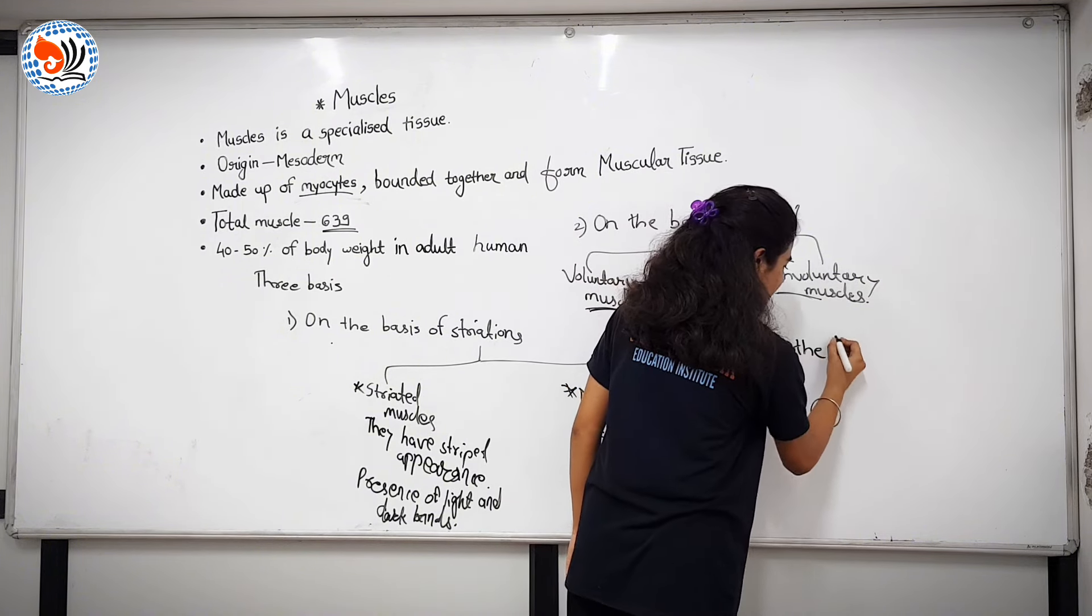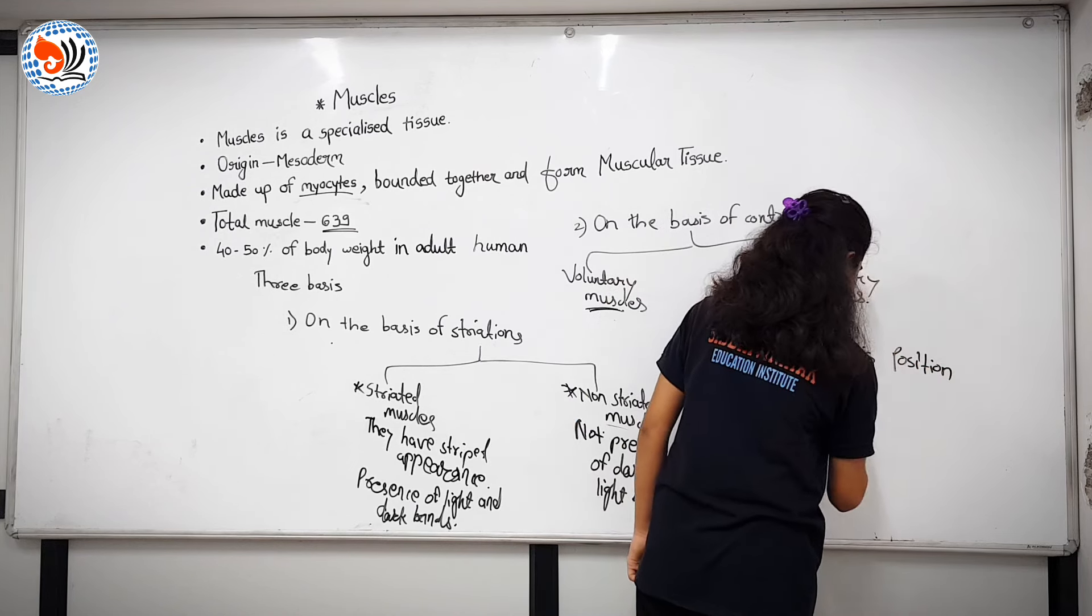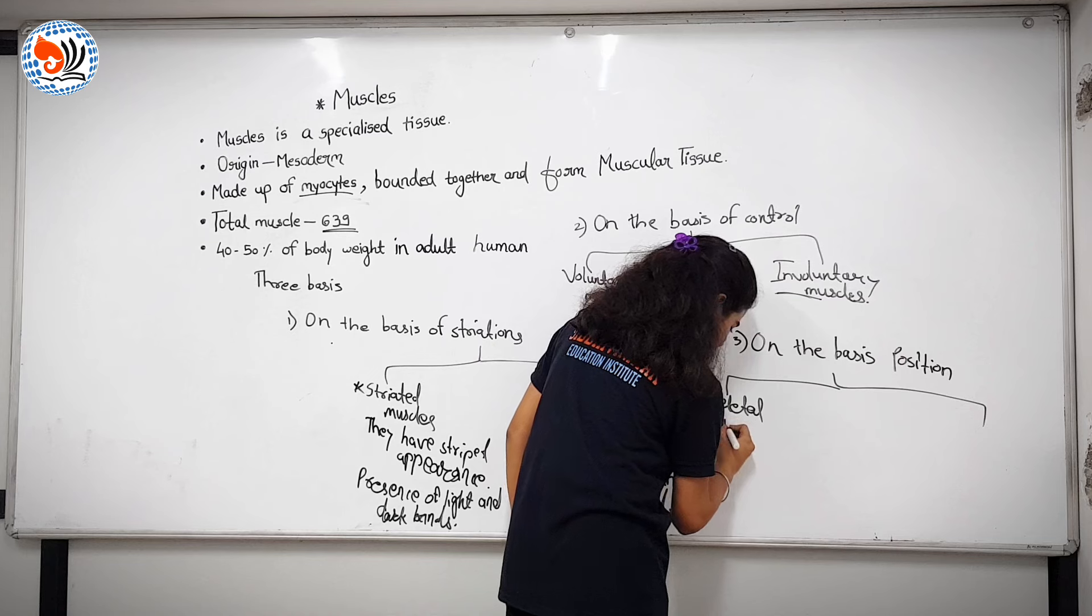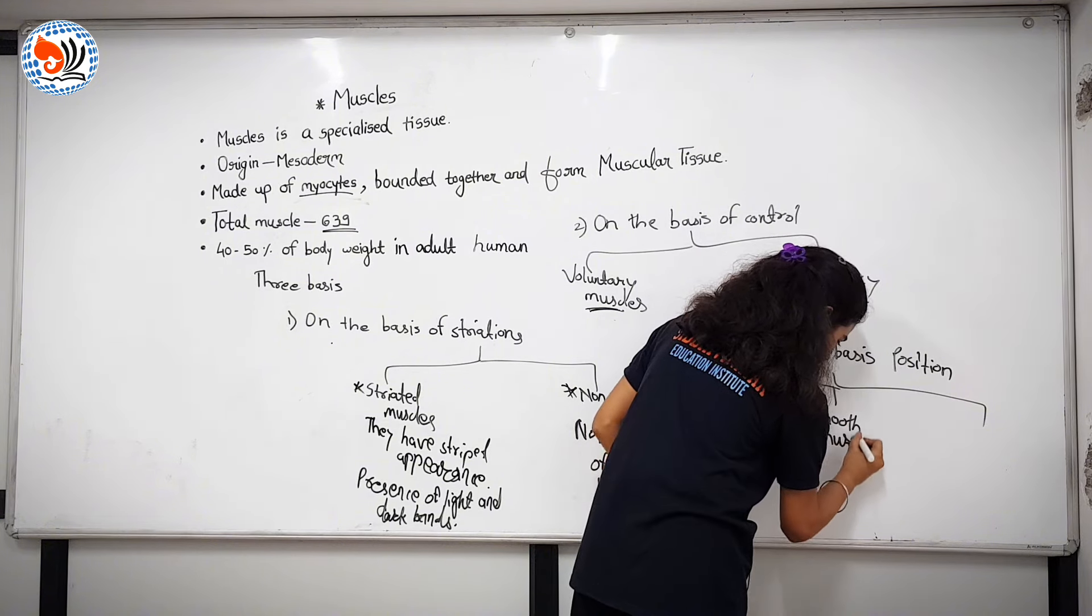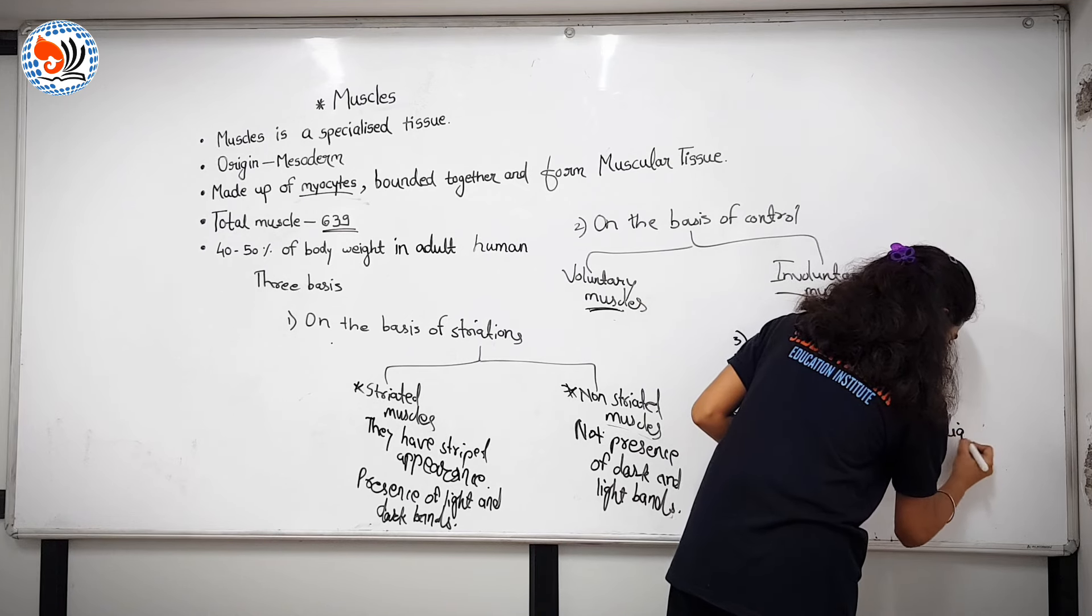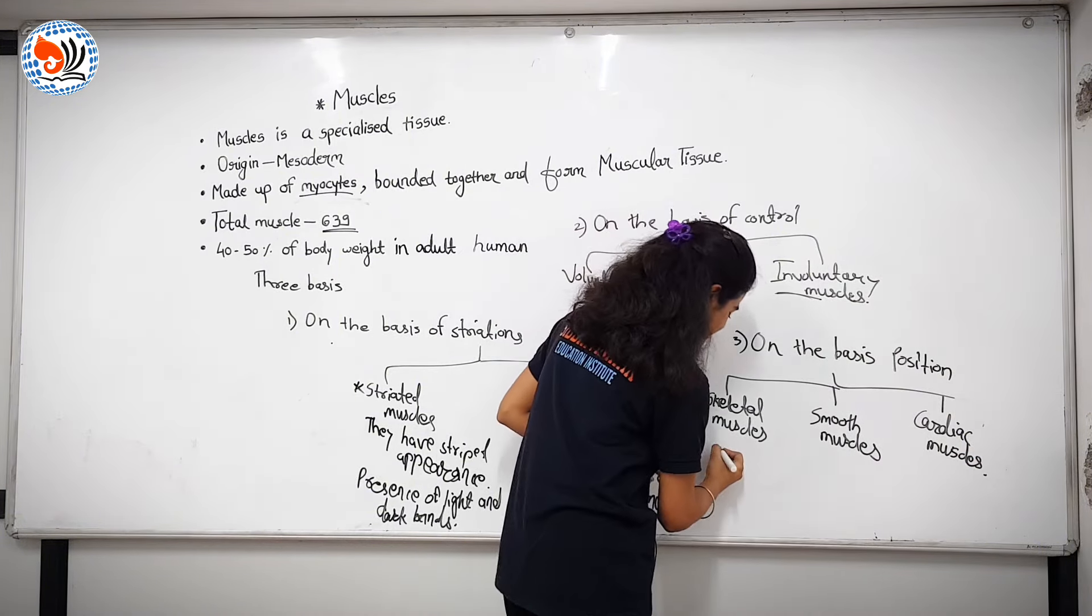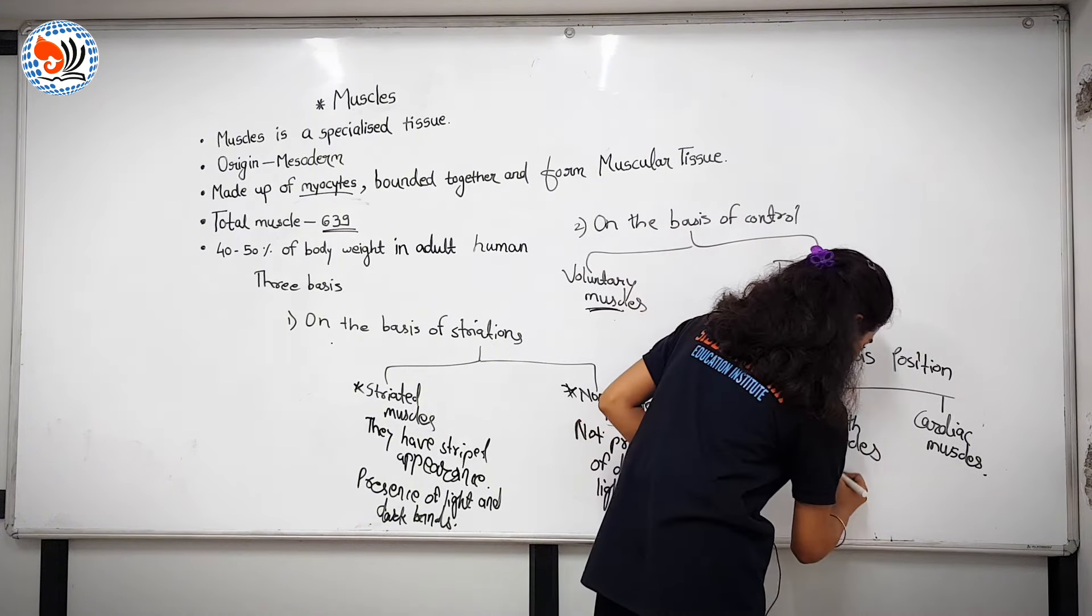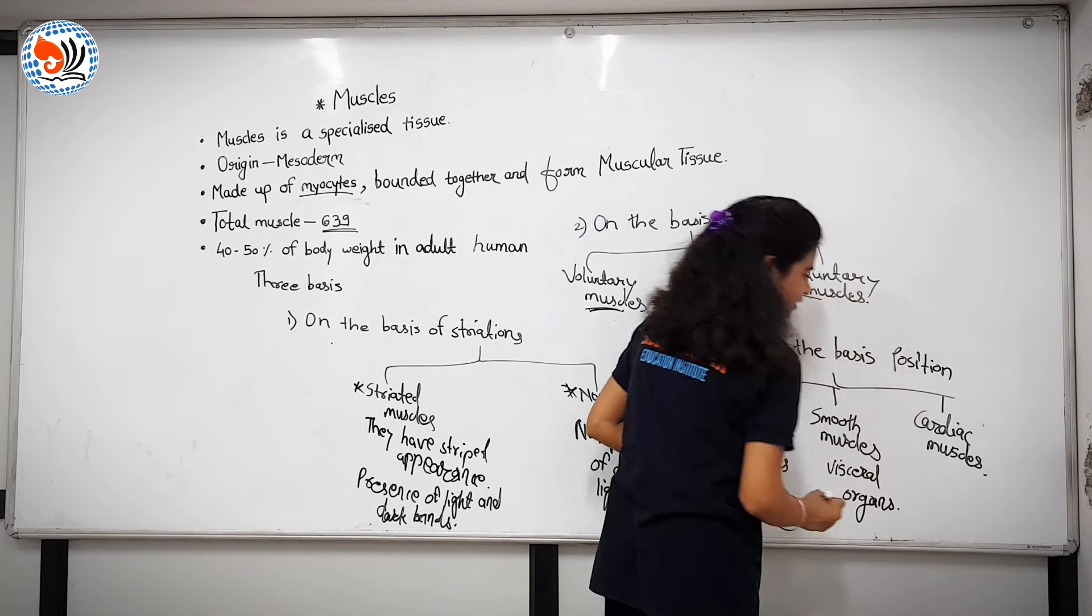Third, on the basis of position. There are three types: skeletal muscles, smooth muscles, and third cardiac muscles. Skeletal muscles are present in limbs and arms. Smooth muscles are present in visceral organs. Cardiac muscles are present in heart.